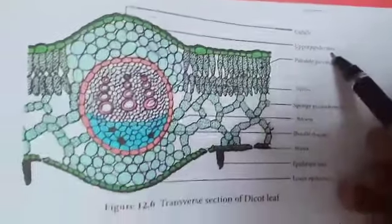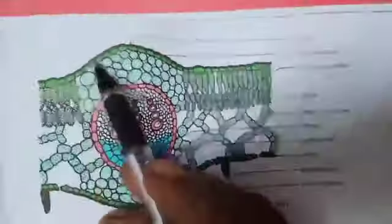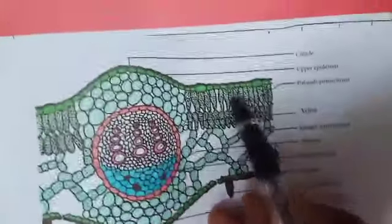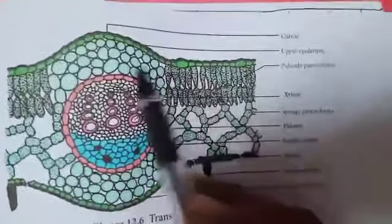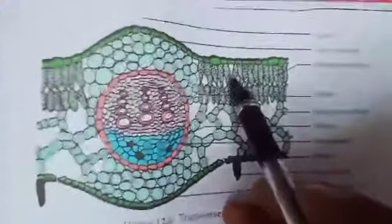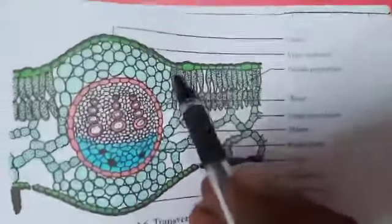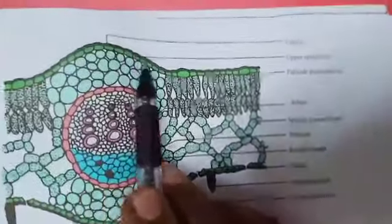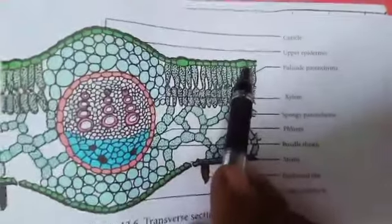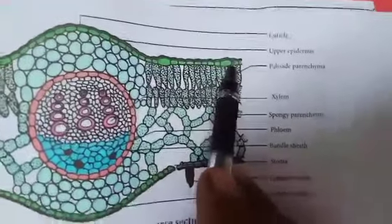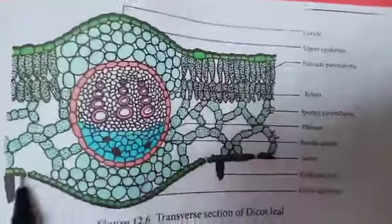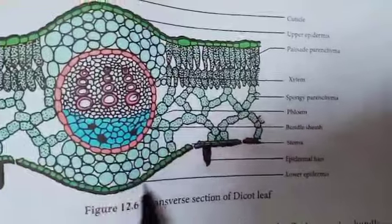Upper epidermis is made up of thin-walled parenchyma tissue, single layer, without intercellular spaces. The outer walls are covered by a thick cuticle. Stomata are less in number in the upper epidermis.